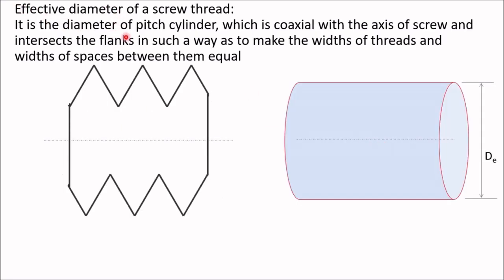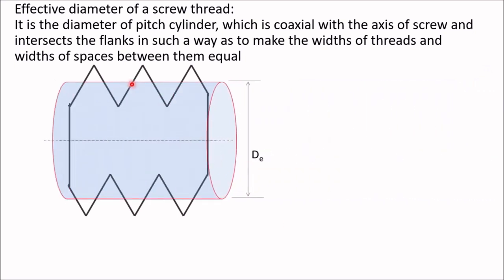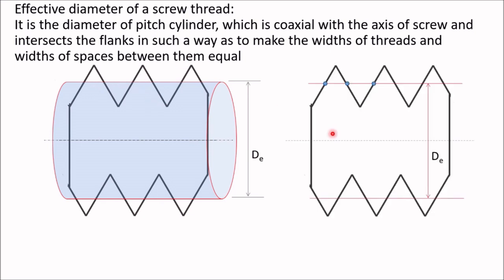Now what is an effective diameter? It is the diameter of pitch cylinder which is coaxial with the axis of screw and intersects the flanks in such a way as to make the widths of threads and widths of spaces between them equal. I have drawn one imaginary cylinder with the same axis, with diameter equal to the effective diameter. If you place this cylinder here, then it will cut the flanks such that the width of threads equals the width of spaces — this distance must equal this distance. Then this diameter is the effective diameter.